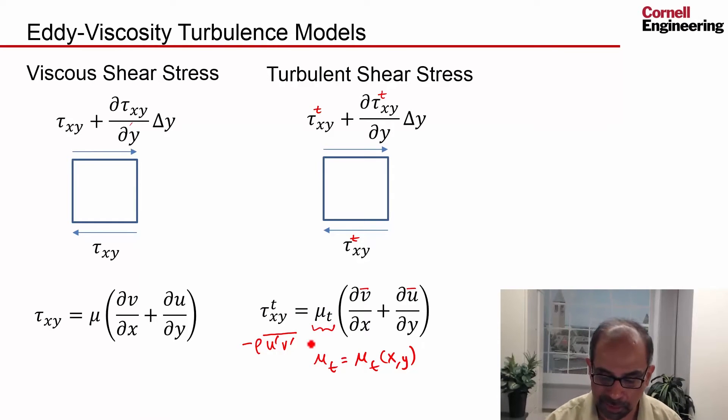That's a big assumption, by the way. One would also write an analogous expression for the normal stresses. And then the next thing to do is to look at the k-epsilon turbulence model that will compute the eddy viscosity for us.